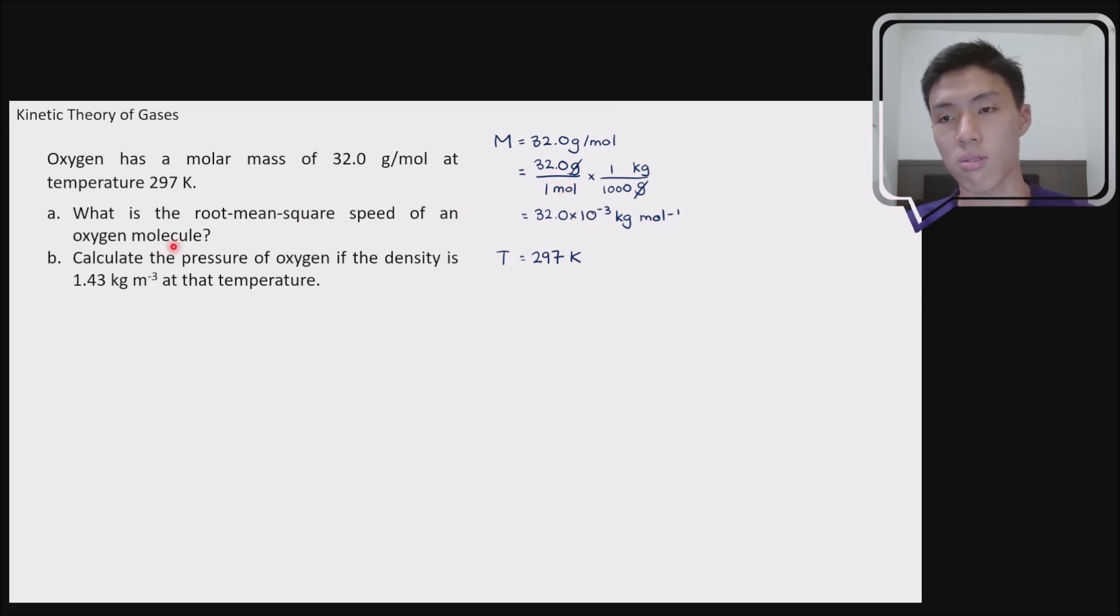So what does the question ask for? The question asks for the root mean square speed of an oxygen molecule. Overall, if you want to represent the speed of the oxygen molecules in the gas system, what kind of value would be a good representation of the speed of the oxygen molecule? That's the idea of root mean square speed. A value that represents the speed of the oxygen molecules in the gas system.